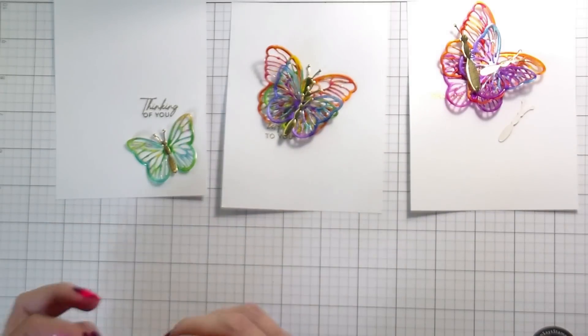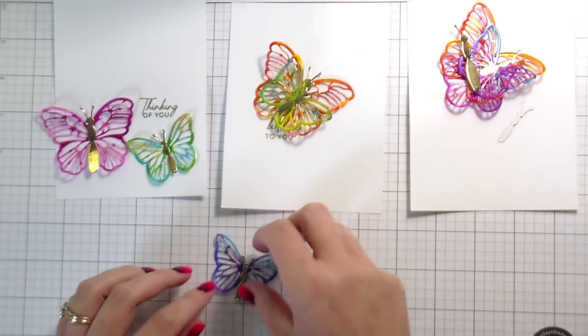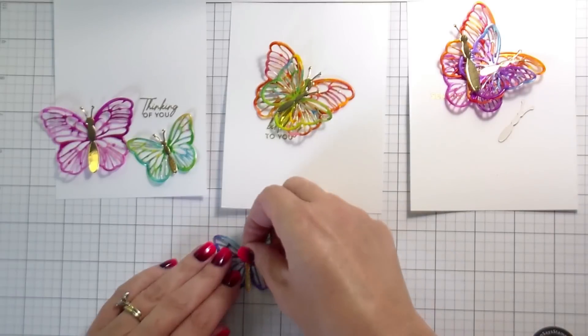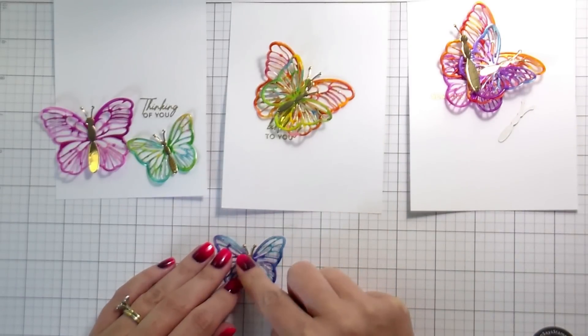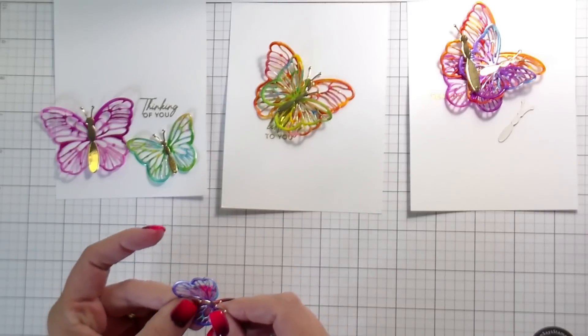I did notice that I had to kind of hold these a little longer than I would if I was gluing cardstock to cardstock. Because I'm gluing cardstock to the acetate, I did have to just kind of hold them down there a hair longer. Something else to note.